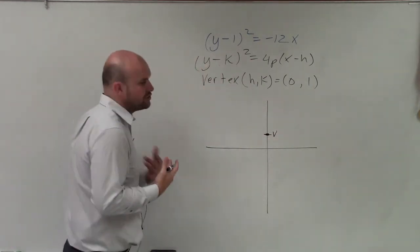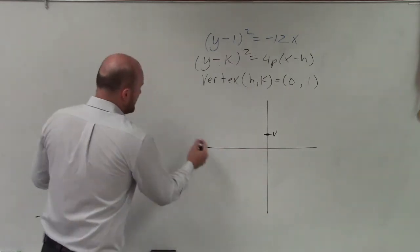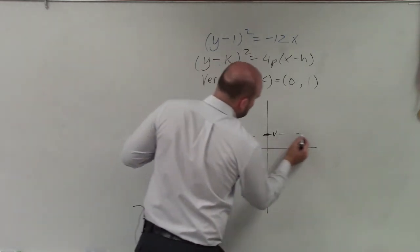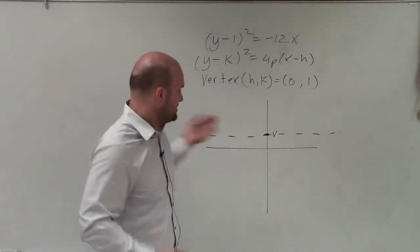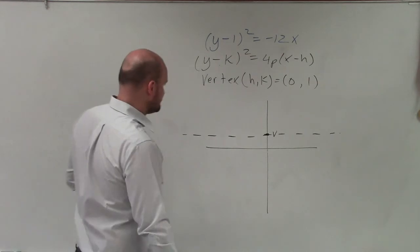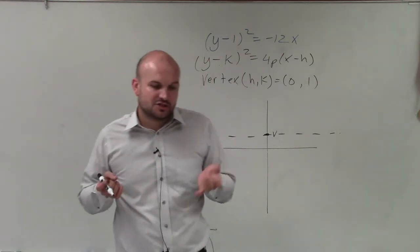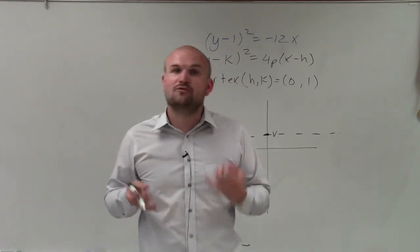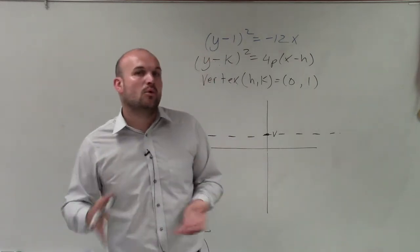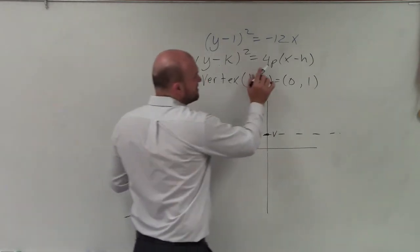Now what I need to do is determine, does my graph open to the right or to the left? We know that the axis of symmetry is horizontal, and remember, the axis of symmetry has to go through the vertex. That's why I know there's my axis of symmetry. But where exactly - how does the graph open up? To determine that, we know that the graph is going to open up in the direction of its focus. So if we can determine the focus, we're going to know where the graph opens. To do that, we need to determine the value of p.